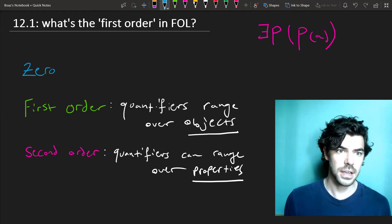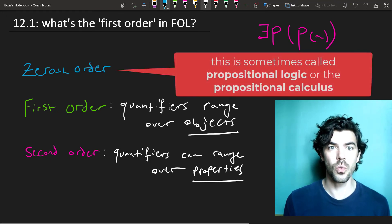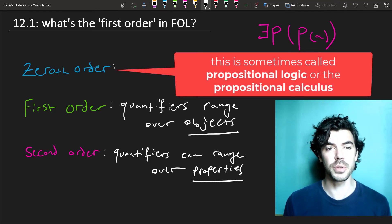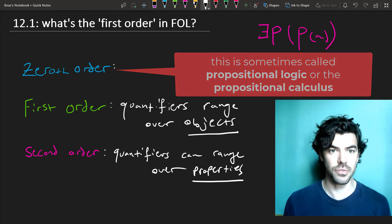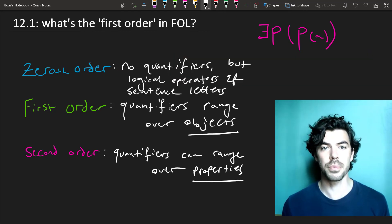Finally, there's zero or zeroth-order which has no quantifiers at all. This is the boolean and conditional logic that we've seen so far, but it does have logical operators and sentence letters, so this is the kind of logic that we're writing.